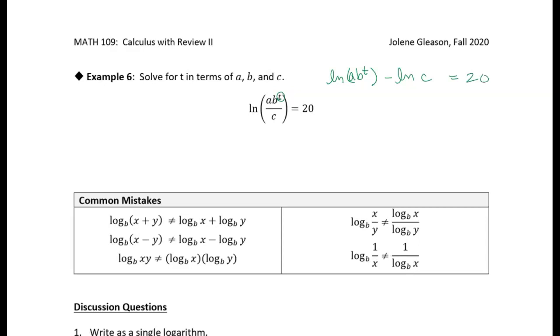I want to solve for t. I'm seeing a product here, right? So let's see if we can break that down a little bit. So I have a times b to the t. So I'm going to break that into natural log of a plus the natural log of b to the t. And then I still have this minus natural log of c equals 20.